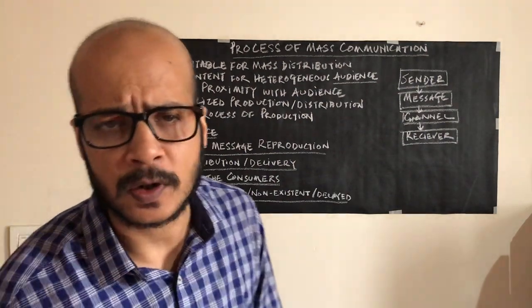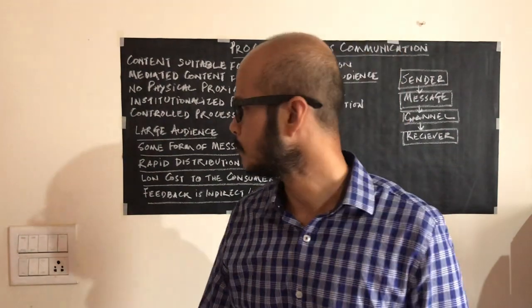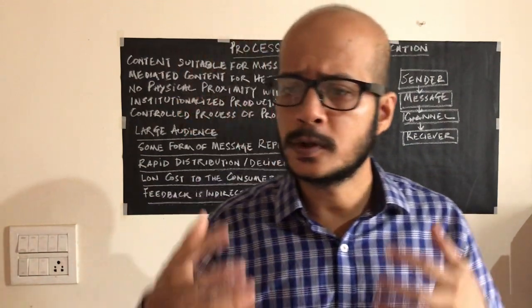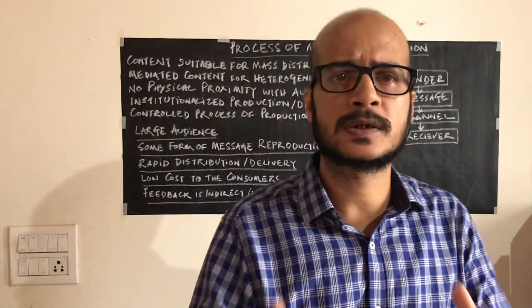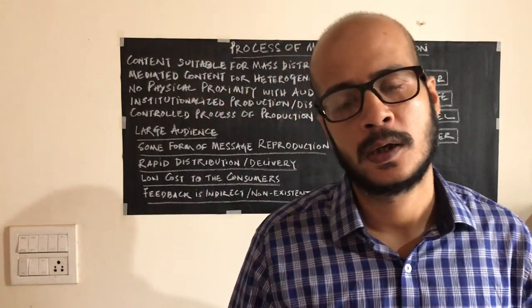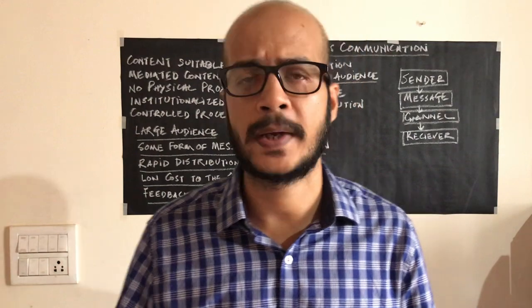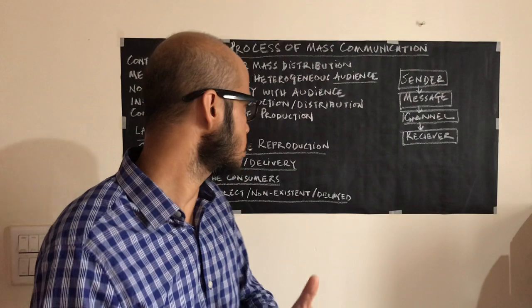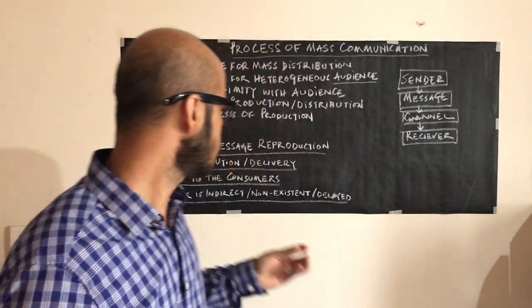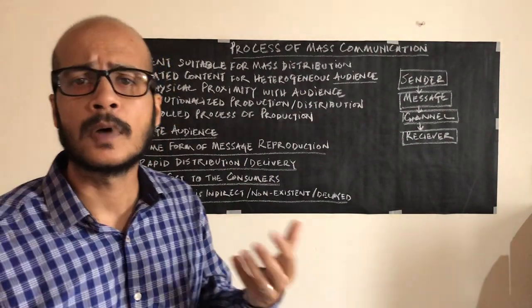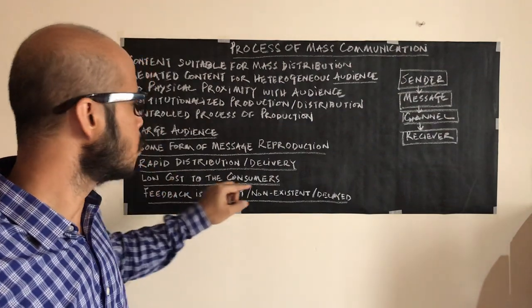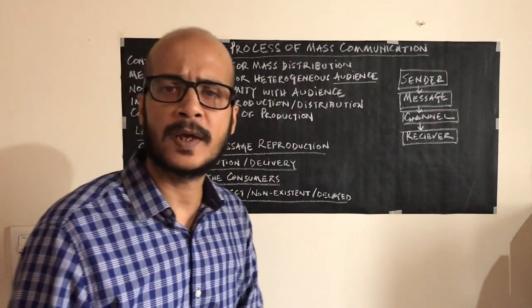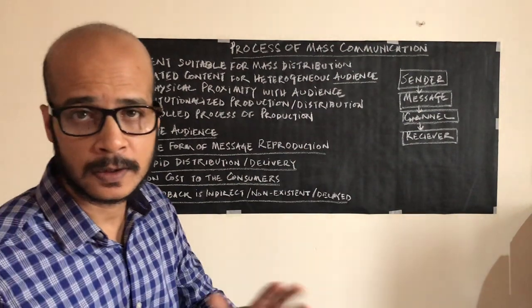Low cost to consumers is the next feature. A newspaper barely costs 10 rupees. You have a device, you have a radio, you just tune in — FM channels are available on mobile phones. It's the device cost you're paying, which is mostly one-time. If you subscribe to platforms like YouTube, Netflix, or Amazon, these are very cheap and effective ways of consuming content. Monthly subscriptions are barely anything compared to the production cost.